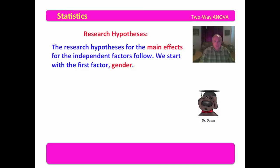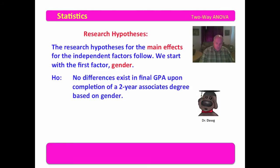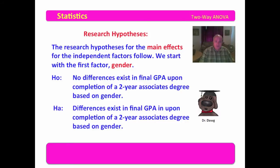The first research hypotheses for the main effects cover the independent factors. Starting with the first factor, gender: the null hypothesis is that no differences exist in final GPA upon completion of a two-year associate's degree based on gender. The alternate hypothesis is that differences exist based on gender. The question was 'do differences exist?' — the null says no differences exist, and the alternate says differences exist.